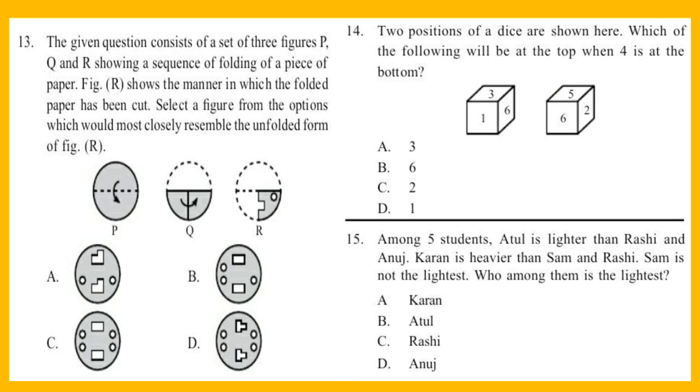Question 13: The given question consists of a set of three figures P, Q, and R showing a sequence of folding of a piece of paper. Figure R shows the manner in which the folded paper has been cut. Select a figure from the options which would most closely resemble the unfolded form of figure R. Question 14: Two positions of a dice are shown here. Which of the following will be at the top when 4 is at the bottom?